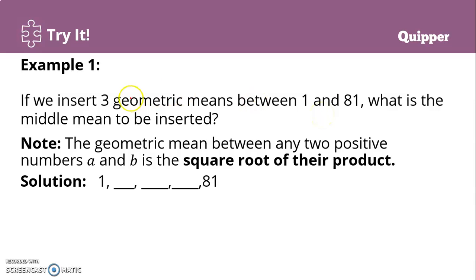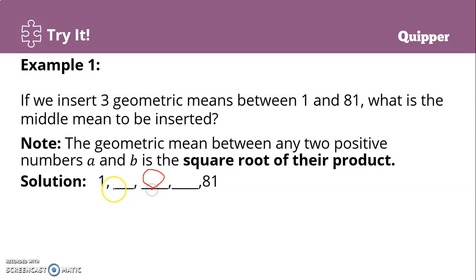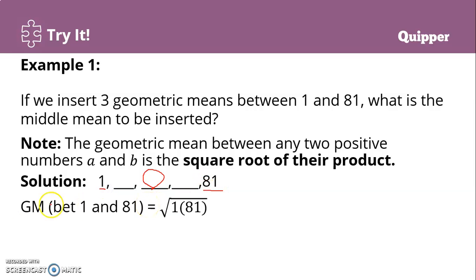Since we are looking for three geometric means between 1 and 81, we have five terms: 1, blank, blank, blank, and 81. To find the middle mean, we are looking for the square root of 1 and 81. That is the geometric mean between 1 and 81, so it's the square root of 1 times 81.